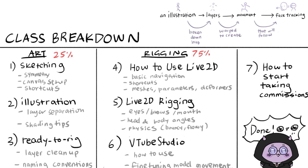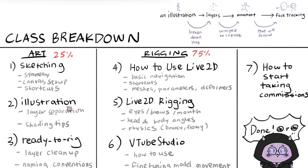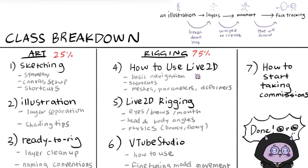The overall breakdown of the class would look like this — all 20-plus videos will be covering these topics. First is a very simple character creation. Then we'll take the character and sketch out our model, then move on to the proper illustration where we start separating the layers. And then we'll clean it up so that it's all ready to bring to Live2D.